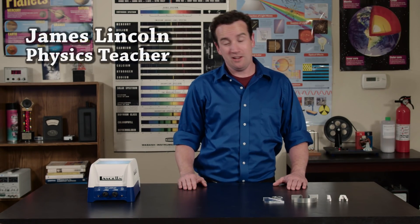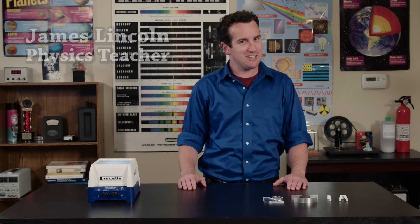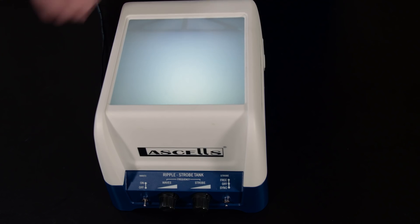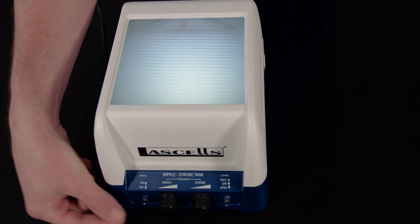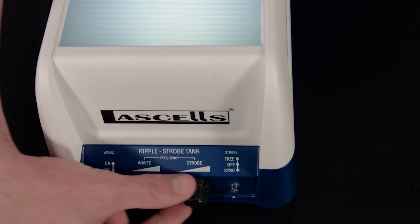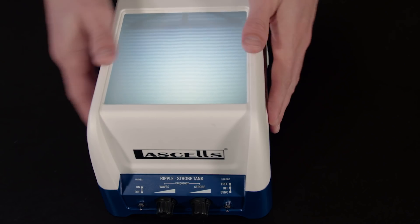This is the mini ripple tank and it can replace those larger clumsy ripple tanks because it is so easy to set up. By this I mean it is ready now. You can see the waves immediately on the screen without using a projector, and it has an adjustable strobe light built in.